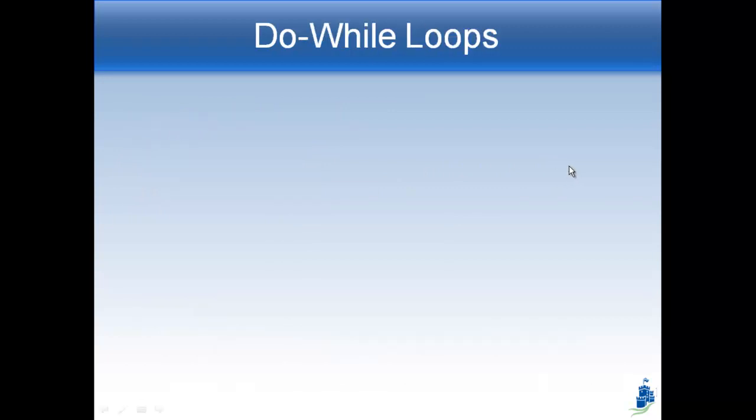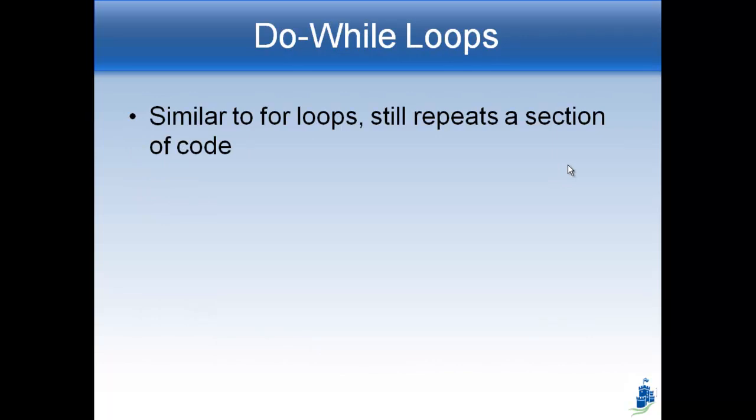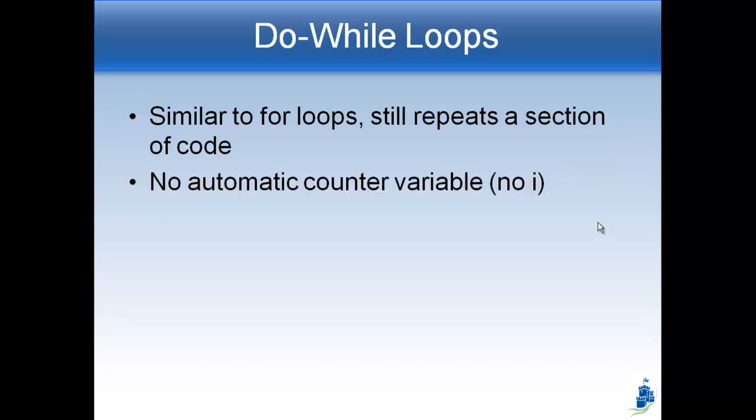Do-while loops are very similar to for loops because they can repeat sections of code just like a for loop — the same section of code 7, 8, however many times you want. But the difference between a do-while loop and a for loop is that there's no i in the do-while loop. There's no automatic counter variable. When we run a for loop from i equals 1 to 10, i starts as 1, then the loop automatically makes it 2, then 3, and automatically stops when i becomes 10. However, that is not the case with the do-while loop — there's no automated special variable that automatically increases like i does.